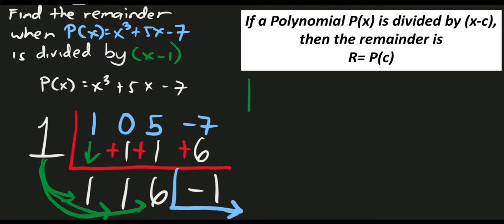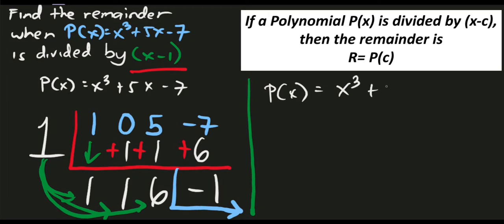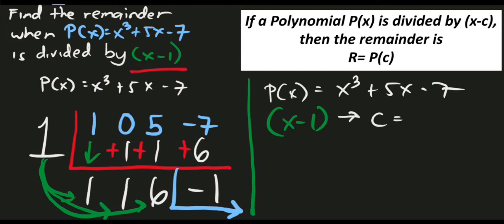Now let's use the remainder theorem to verify. According to the remainder theorem, if the polynomial is divided by x minus c — here x minus 1 — then R equals P of c. We identify c: since we have x minus 1, changing the sign gives c equals positive 1. So we plug in 1 into the original function.